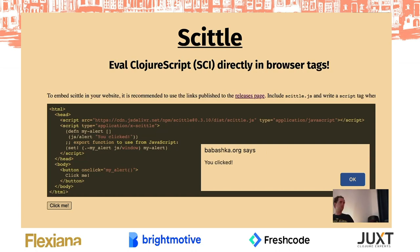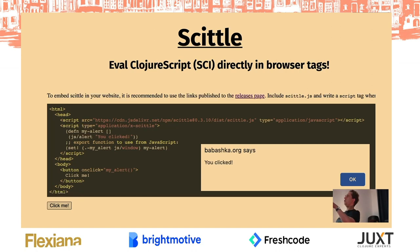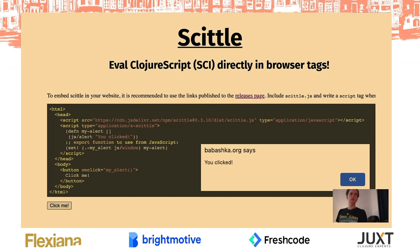Another tool built using the small Clojure interpreter is called Skittle. Skittle allows you to evaluate ClojureScript directly from browser script tags — we don't have to compile our ClojureScript first. You can write a plain HTML file with a script tag that says `application/x-skittle`. You load Skittle from a CDN, and here's a function that says `js/alert` 'you clicked', attached to a button. If you click this button, this alert will appear — the most basic example you can do.